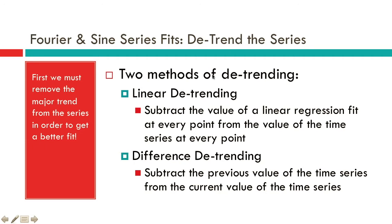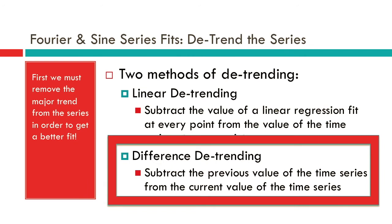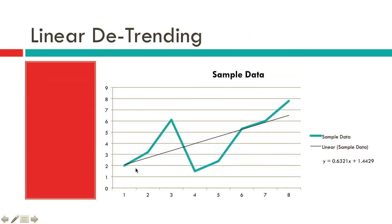There are two popular methods of detrending: linear detrending and difference detrending. Linear detrending is when we subtract the value of a regression line fit to our data, removing the trend. So we have a series with an upward trend, we fit a linear line to it, get the equation y = mx + b, and for each point we get the corresponding value of the line.